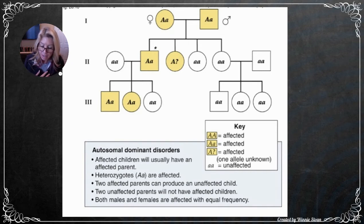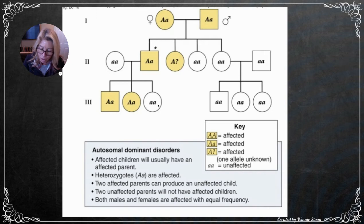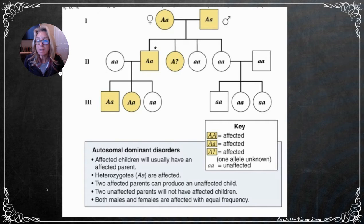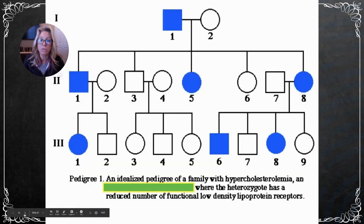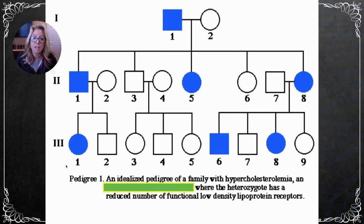For autosomal dominant disorders: affected children will usually have an affected parent. Heterozygotes are affected. Two affected parents can produce an unaffected child, as long as they were carriers for a good copy of the gene.